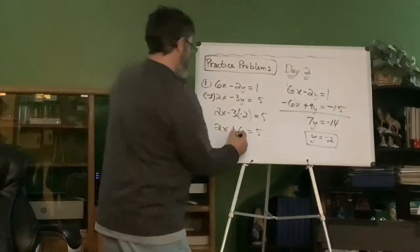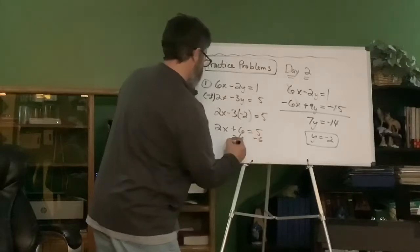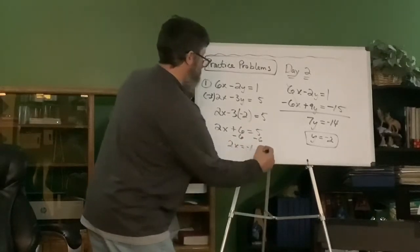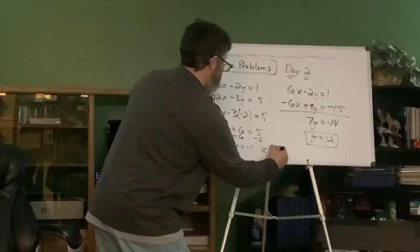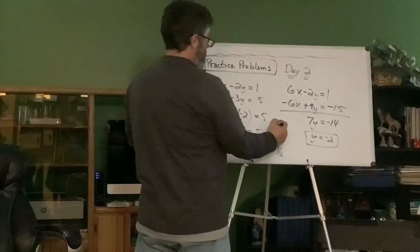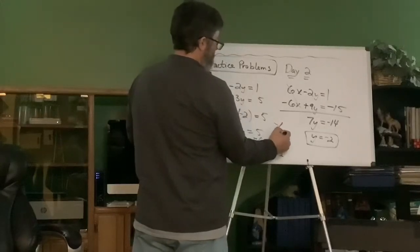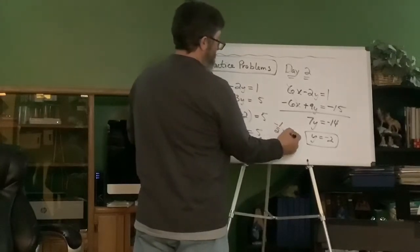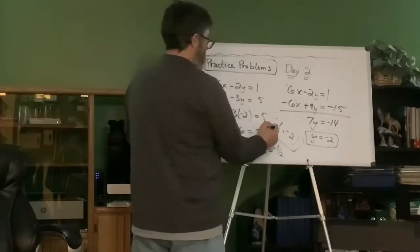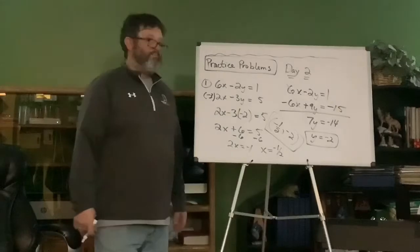I'm going to subtract six from each side. Minus six, minus six. Two x equals negative one. Oh, what's x going to equal? X equals negative one half. No big deal. That's my answer. Negative one half, negative two. Some of you guys will put 0.5. That's fine. Negative two. Bam. Bam.